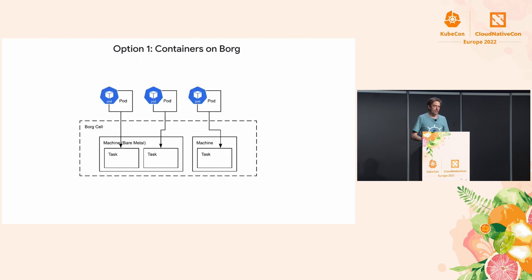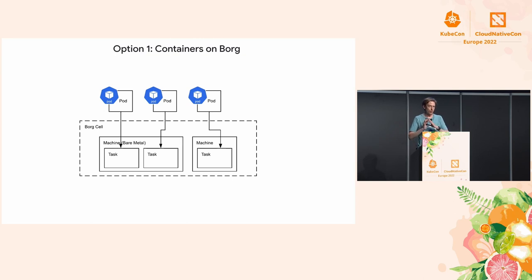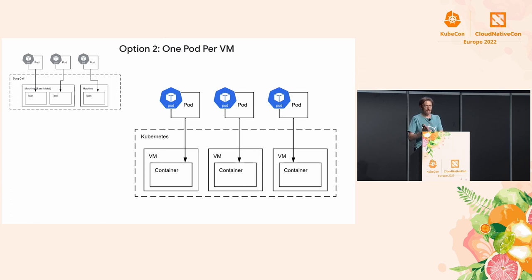The first option was to use Borg — Google's container orchestrator used internally, the subject of an academic paper online, and the inspiration for Kubernetes itself. One option would have been to run pod containers as so-called tasks in Borg. An advantage of that system is it's massively multi-tenant, with very rapid scaling and many other benefits.